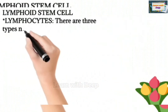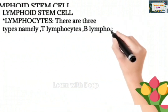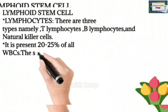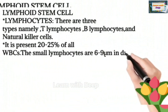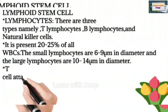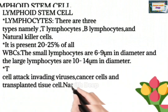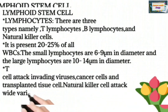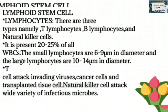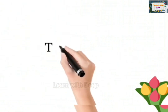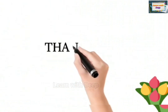Lymphoid stem cells give rise to lymphocytes. There are three types: T lymphocytes, B lymphocytes, and natural killer cells. Lymphocytes make up 20 to 25% of all WBCs. Small lymphocytes are 6 to 9 micrometers in diameter. Thank you guys.